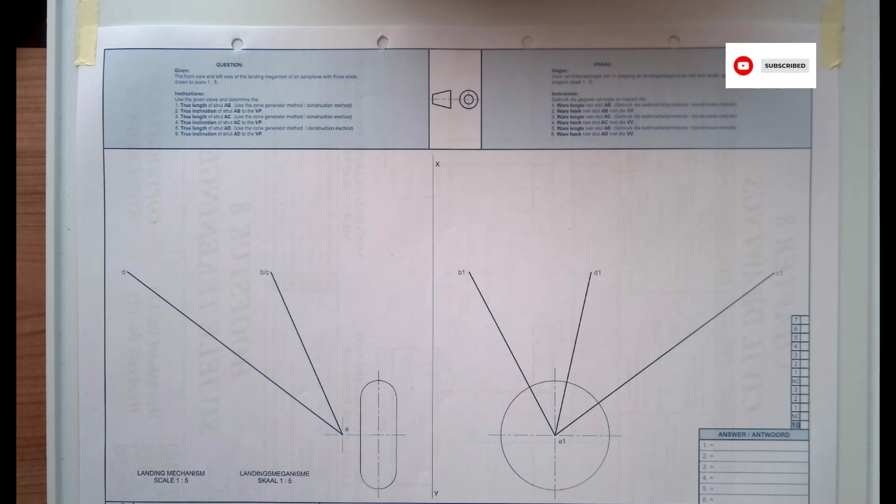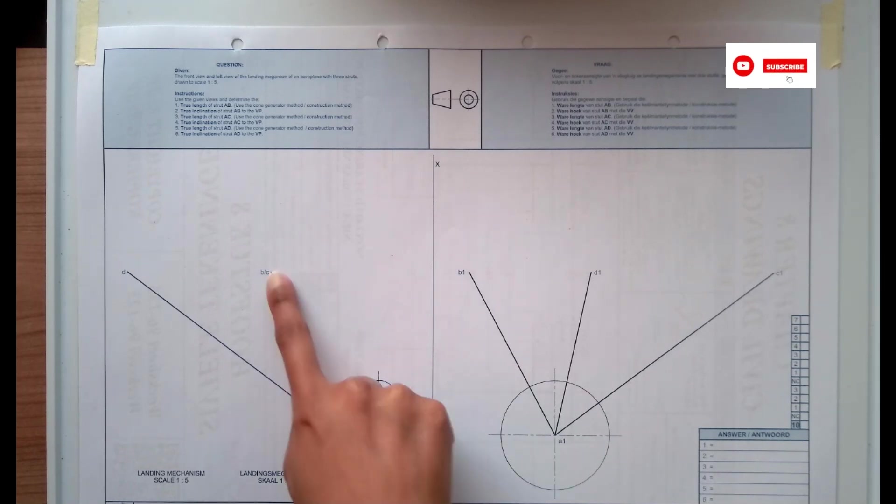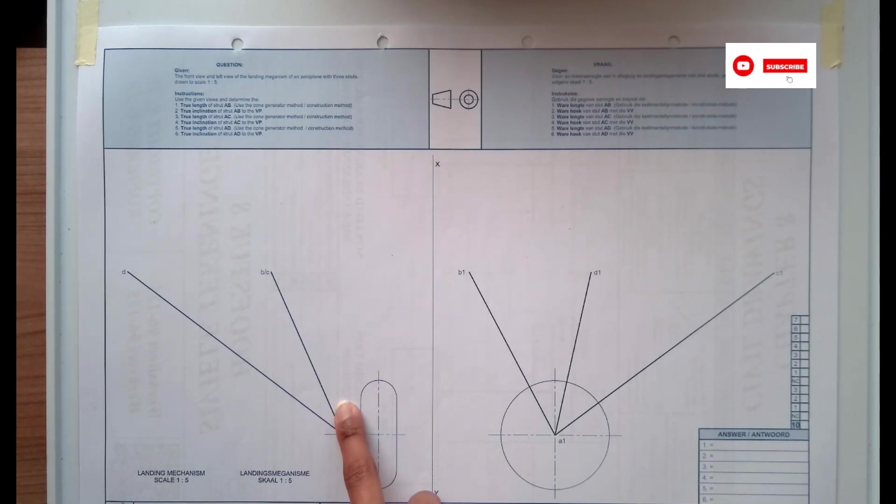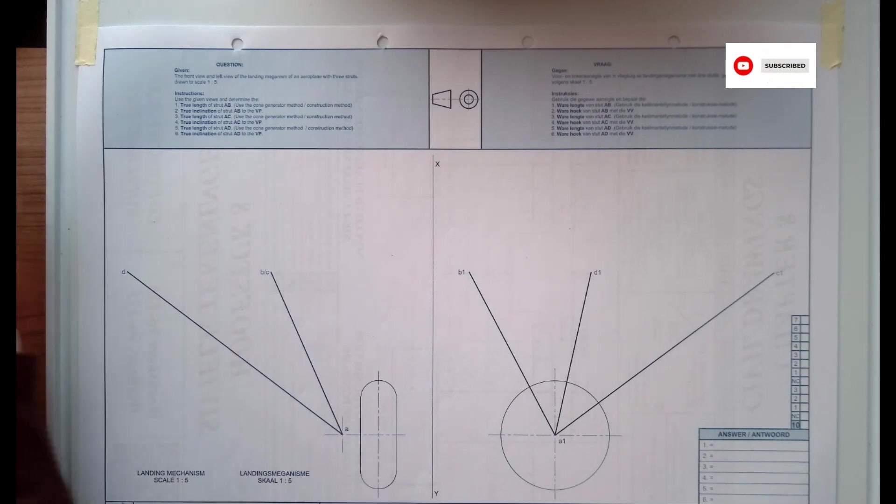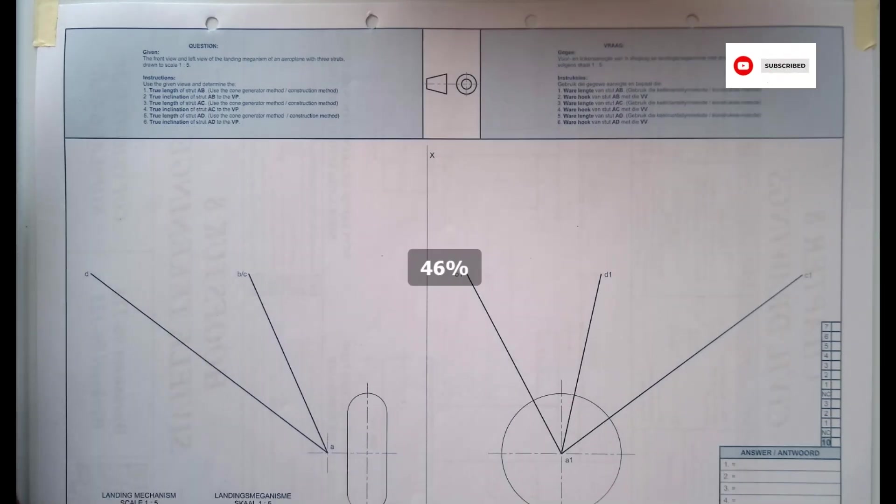The instructions are saying we must find the true length of strut AB and we must use the cone generator method which is also known as the construction method. So you get the true length and the true inclinations. We're going to get started with finding the true length of AB.